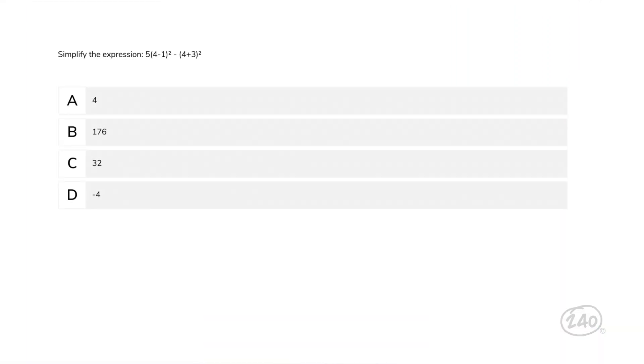Simplify the expression 5 times the quantity (4 minus 1) squared minus the quantity (4 plus 3) squared. Think back to our old friend PEMDAS. Remember to solve what's in the parentheses first. Then move on to exponents, before multiplication, then subtraction. Using the correct order of operations, you should end with D.